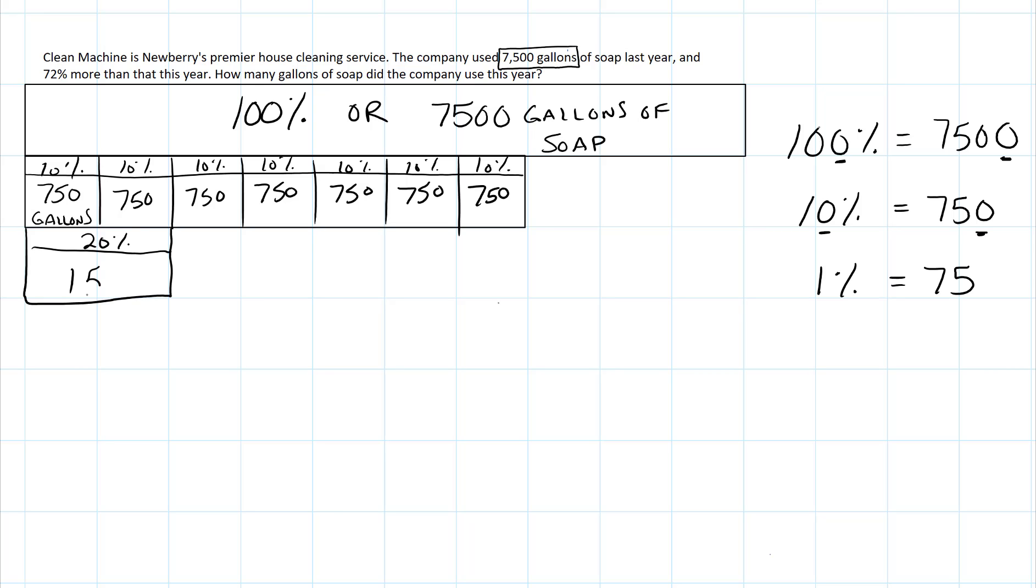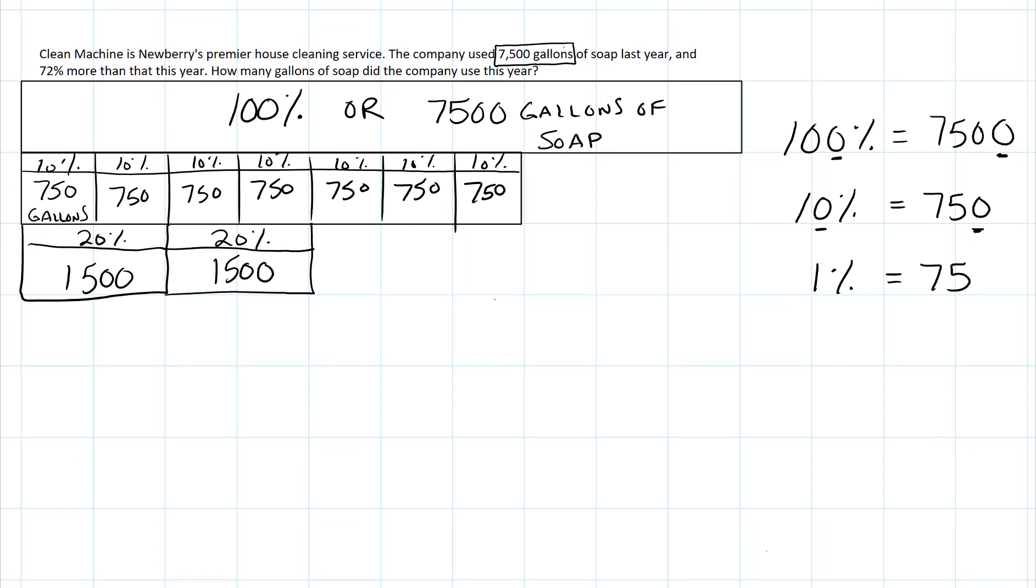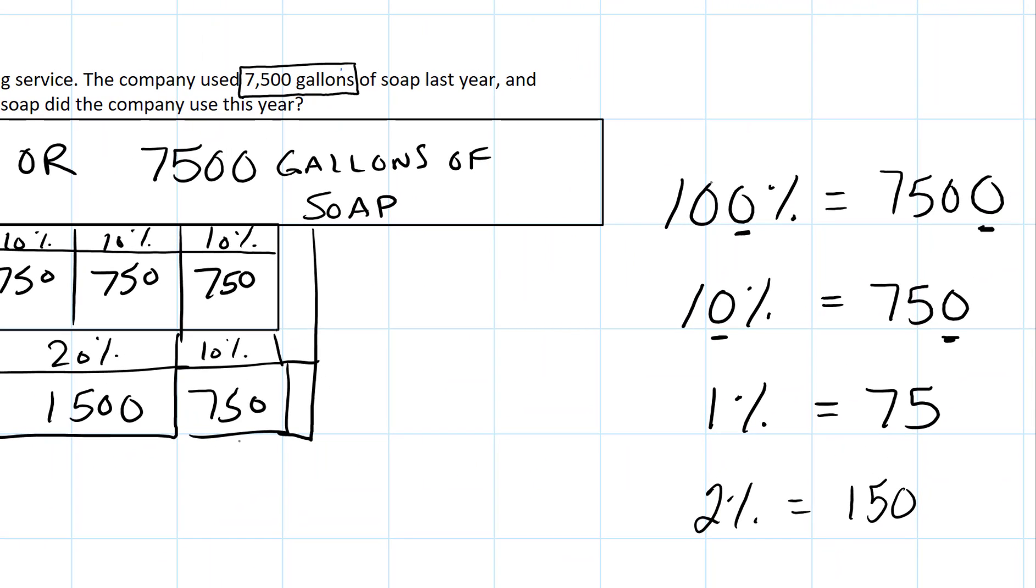750 and 750 is 1,500. So each group of 20% is worth 1,500 gallons. So that might make it a little bit easier if I don't have a calculator to add these numbers up. So we still have our 10% here because there's not another 10% to group with that. Now I still have 2% that I have to create. And I know that 1% is 75. So 2% would be double that amount, so that would make 150. So I could add that on, 2% is 150.